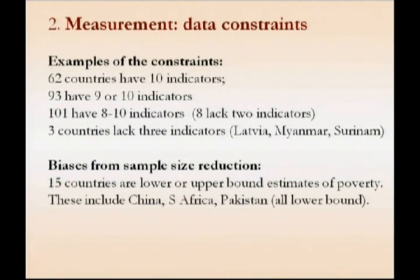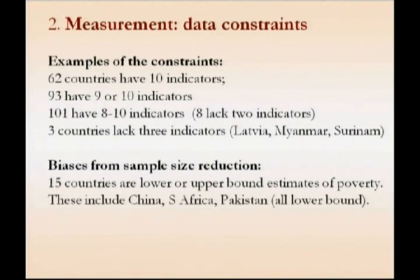For 62 countries, we have all of the 10 indicators. For 93, we have 9 of the 10. For 101, we have 8 of the 10. And then for 3, we lack 3 indicators — Latvia, Myanmar, and Suriname. For 15 countries, the biases from the sample size reduction mean that we can interpret our results as lower or upper bounds only. Unfortunately, this includes China, South Africa, and Pakistan — countries for which we would really wish to have quite good measures.